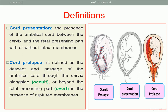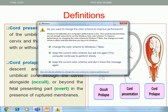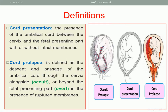Cord prolapse means descent of the umbilical cord below the presenting part through the cervix down to the vagina. So the cord is below the presenting part and descends through the cervix down to the vagina, and maybe outside. This is called cord prolapse.